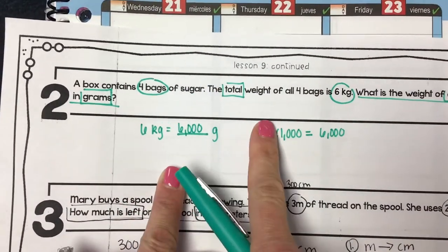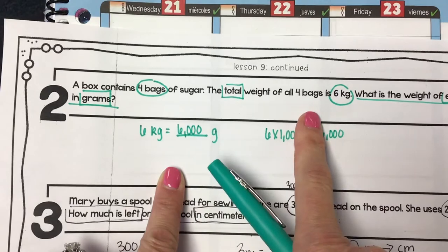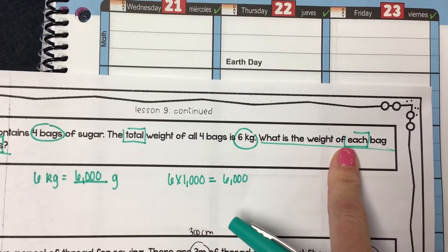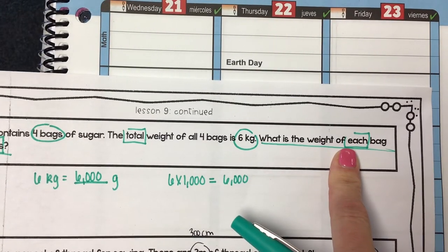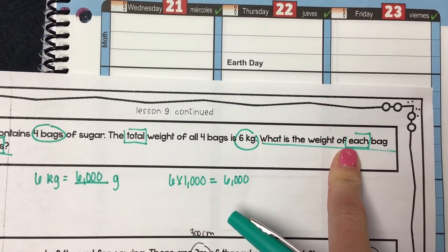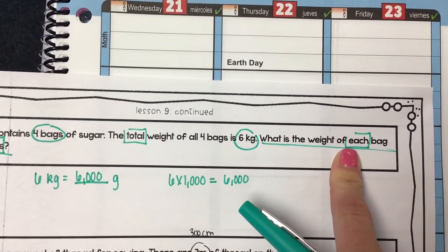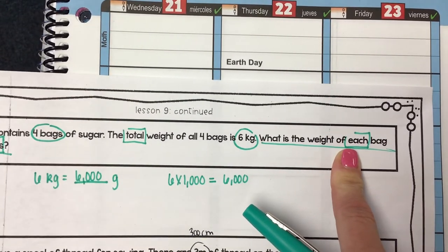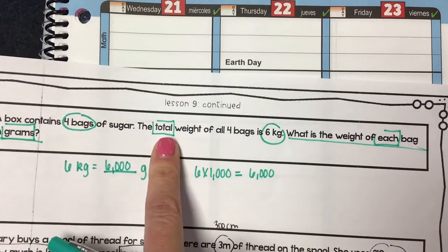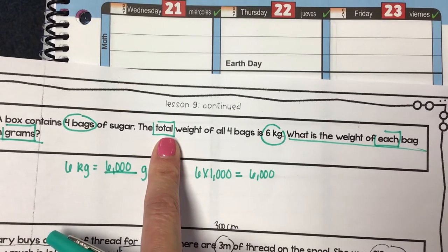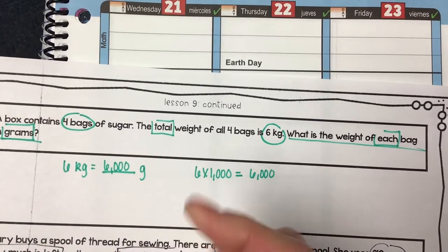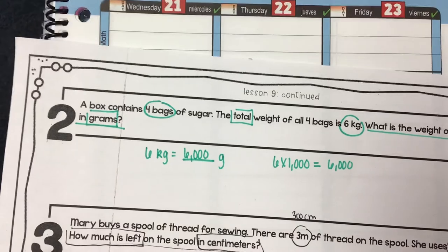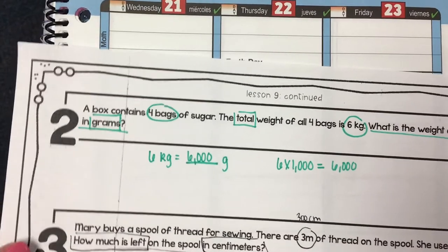That's the total weight, but we want to know how much each bag weighs. The clue word 'each' means we're either going to multiply or divide. Since we already have the total, we're not going to multiply — we need to divide.